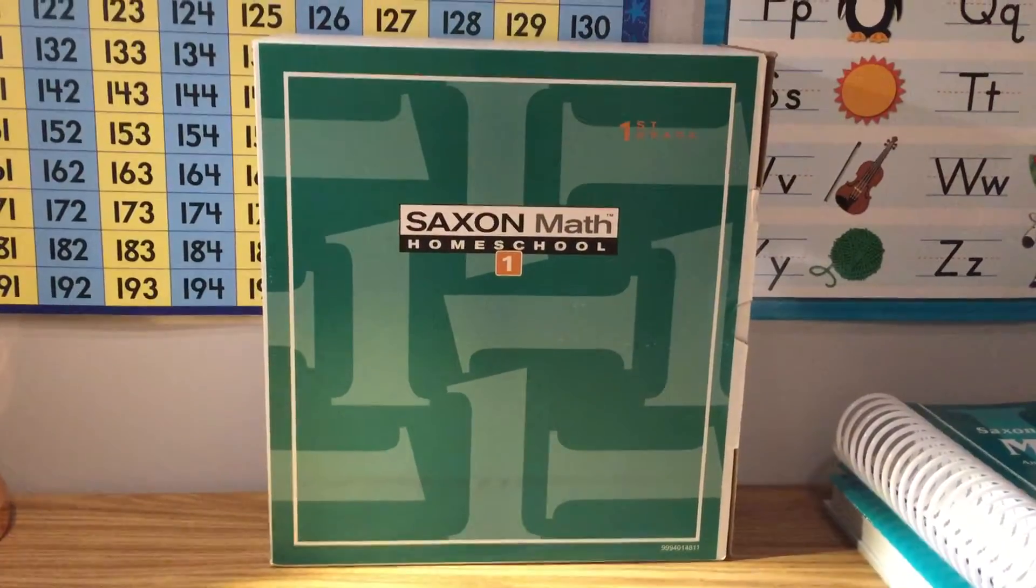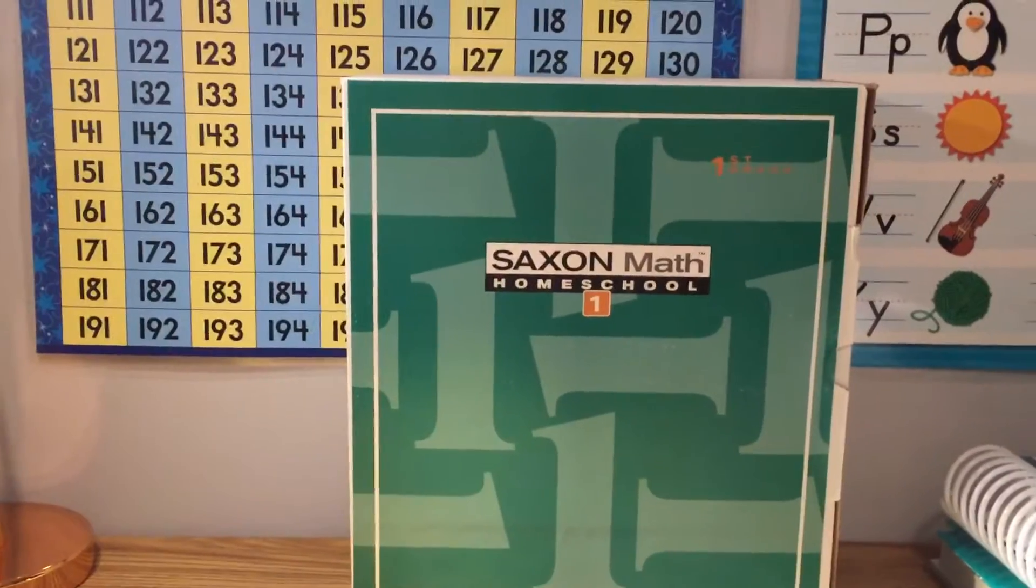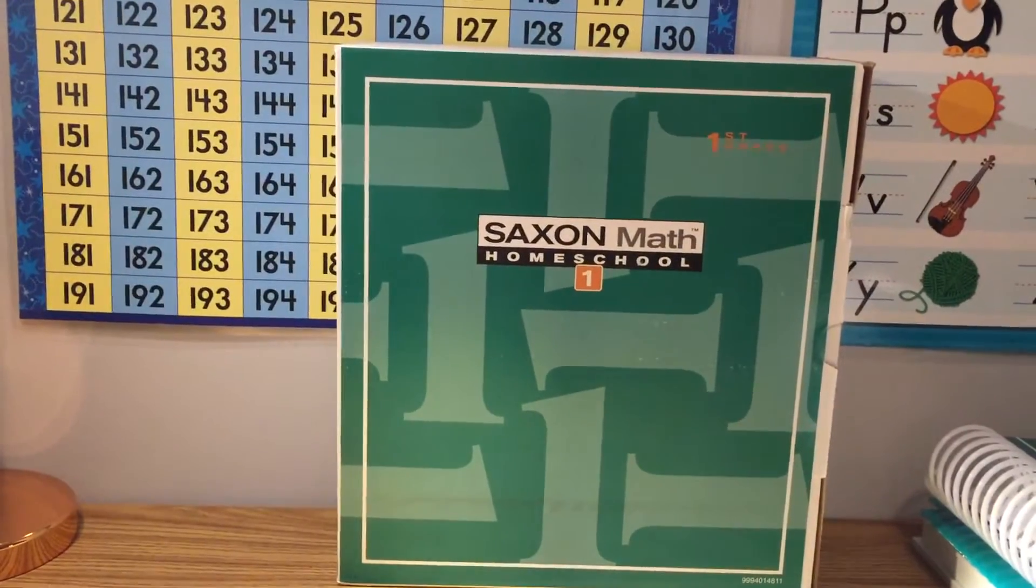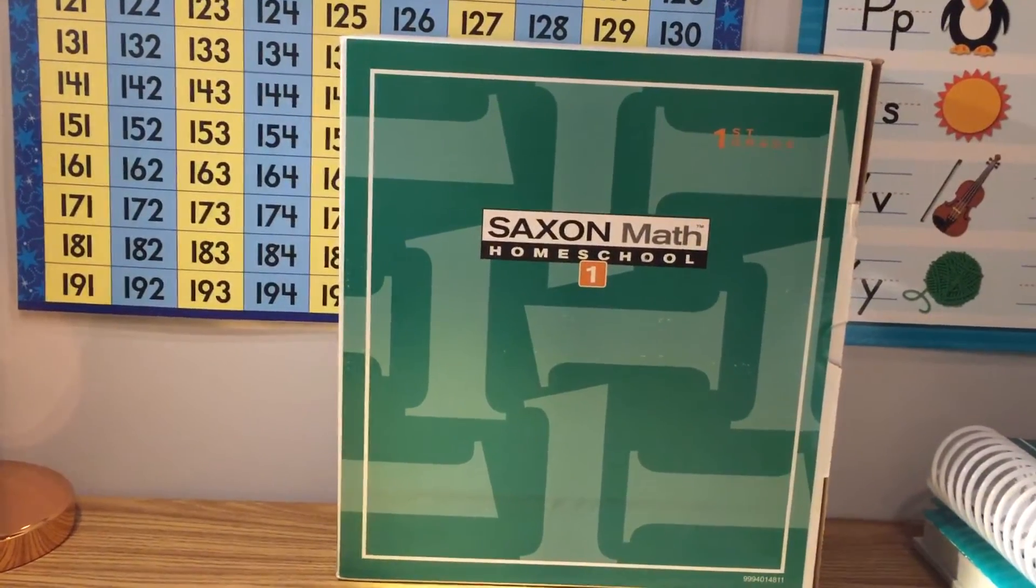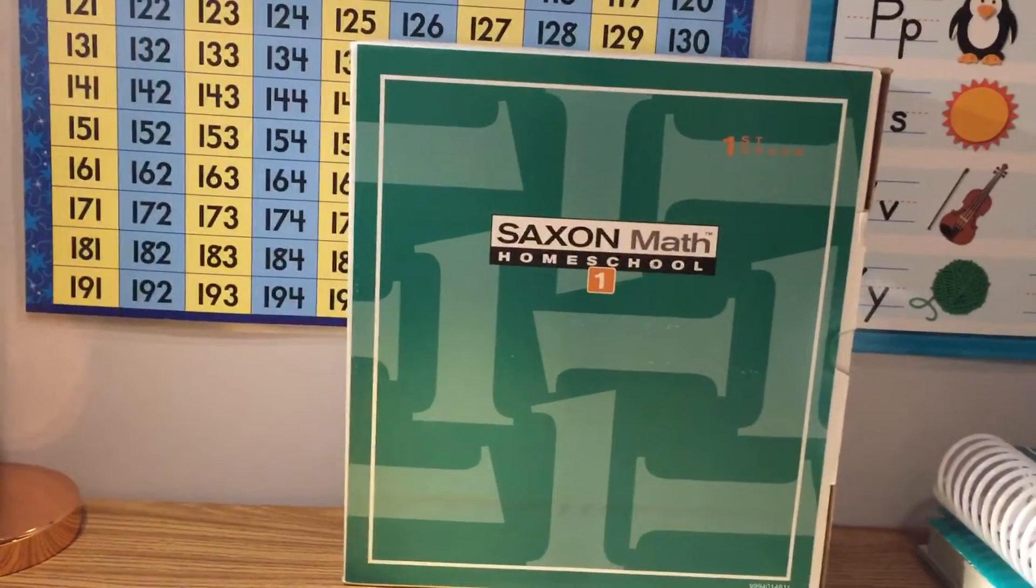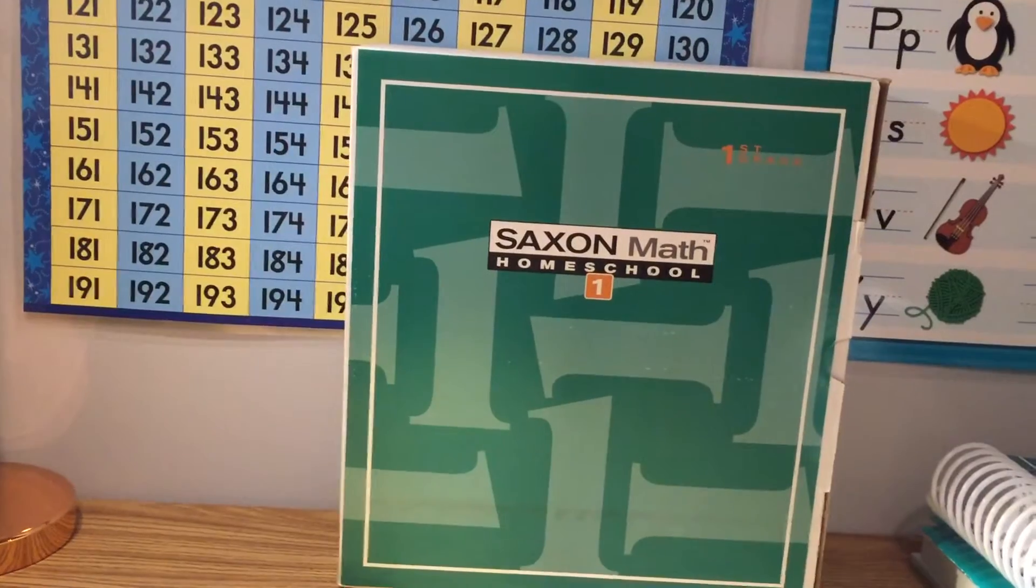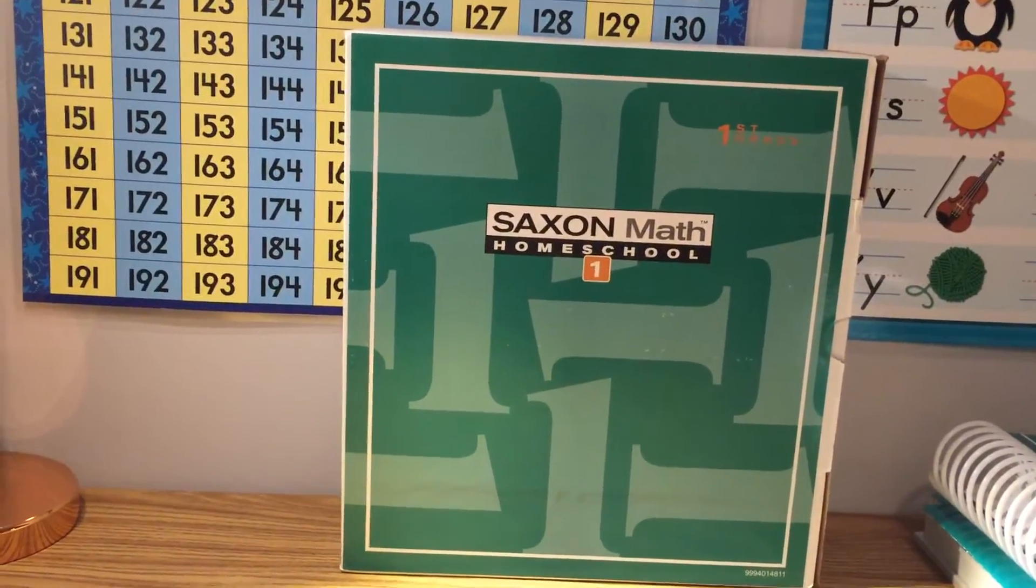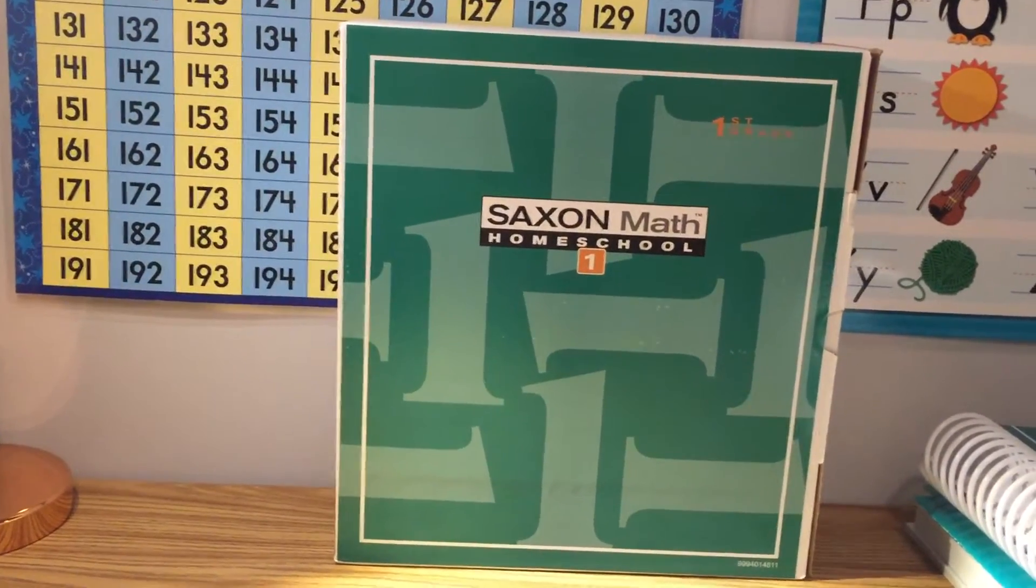So a little bit more about what this curriculum is like. Like I said there's 130 lessons. This is considered a spiral program. That just means that there's continual practice and review throughout the lessons. So every lesson you learn something new. By the second lesson you're reviewing a little bit of what you learned previous and then you're moving on. And it goes on like that for 130 lessons.